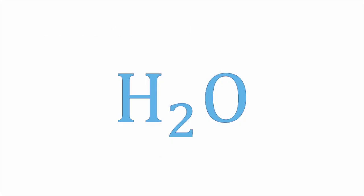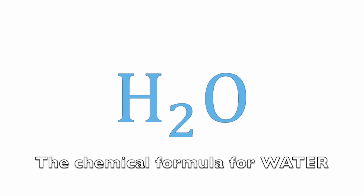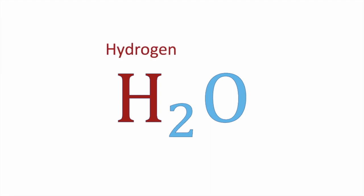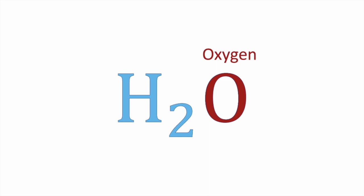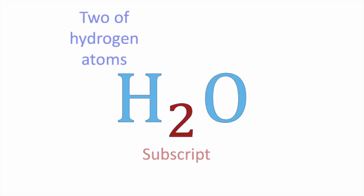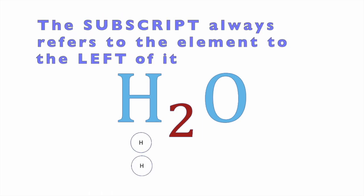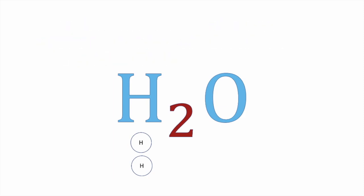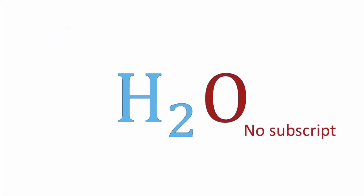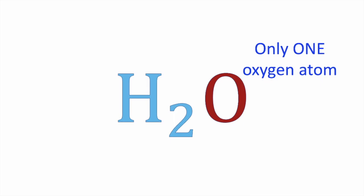H2O is the chemical formula for water. It consists of the chemical symbol for hydrogen and the chemical symbol for oxygen. The subscript 2 tells us that there are two hydrogen atoms in the compound. The subscript always refers to the element to the left of it — in this case, the H. If there is no subscript, we can assume that there is only one of that type of atom in the formula.